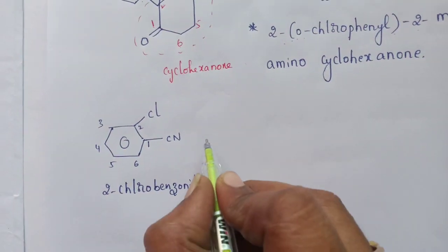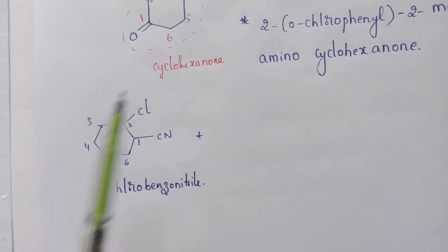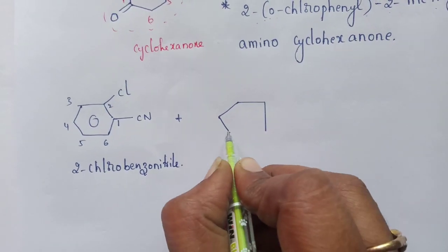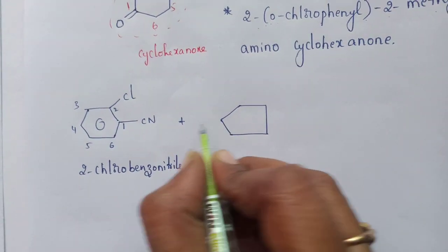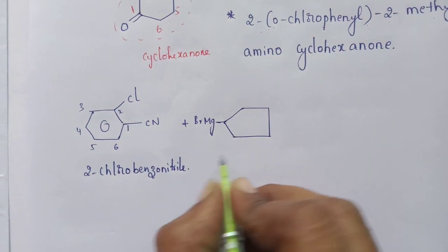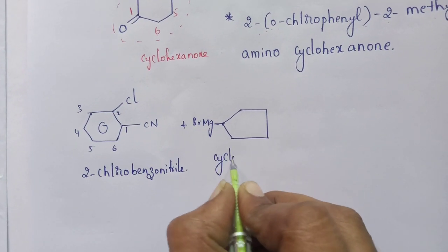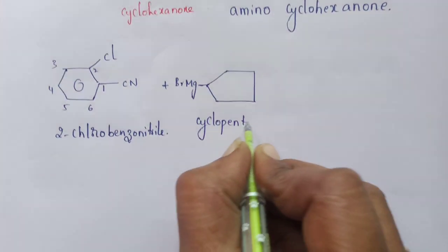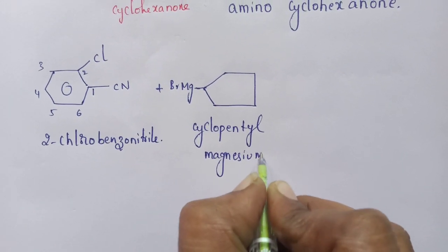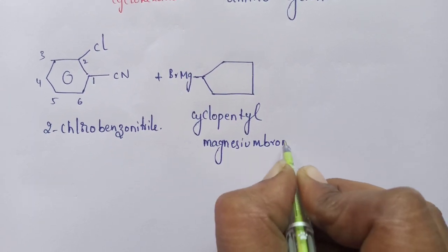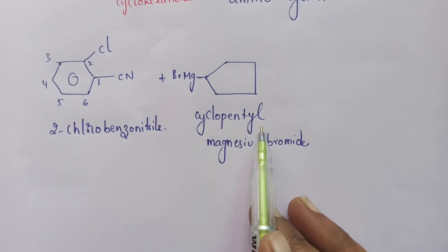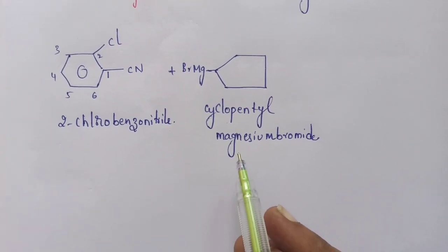The second starting material — instead of cyclohexanone — is cyclopentylmagnesium bromide. So these two are the starting materials: one is 2-chlorobenzonitrile, and the other is cyclopentylmagnesium bromide.